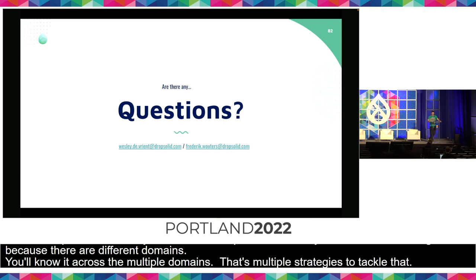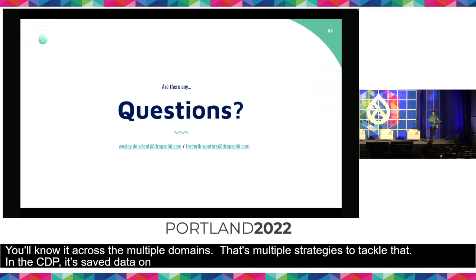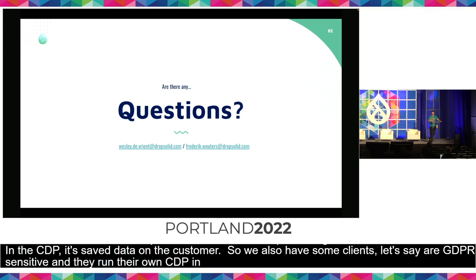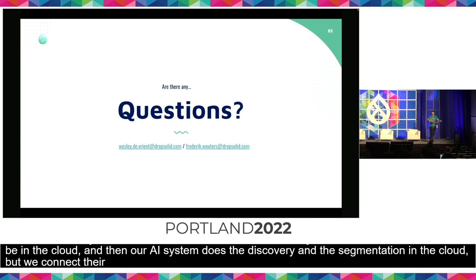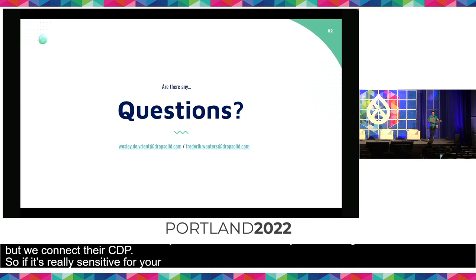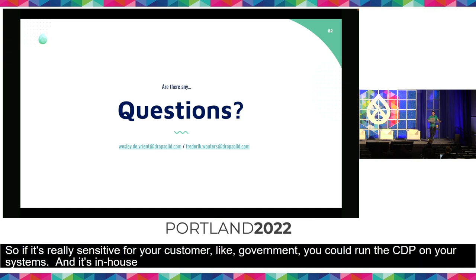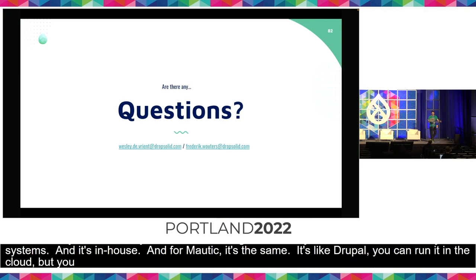In the CDP it's saved data on the customer. We also have some clients who are GDPR sensitive and run their own CDP in the data center — they don't want this customer data to be in the cloud. Our AI system does the discovery and segmentation in the cloud, but we connect to their CDP in their data center. If it's really sensitive for your customer, like government, you could run the CDP on your own systems and it's in-house. And for Mautic it's the same — it's like Drupal, you can run it in the cloud, but you could also run it yourself.